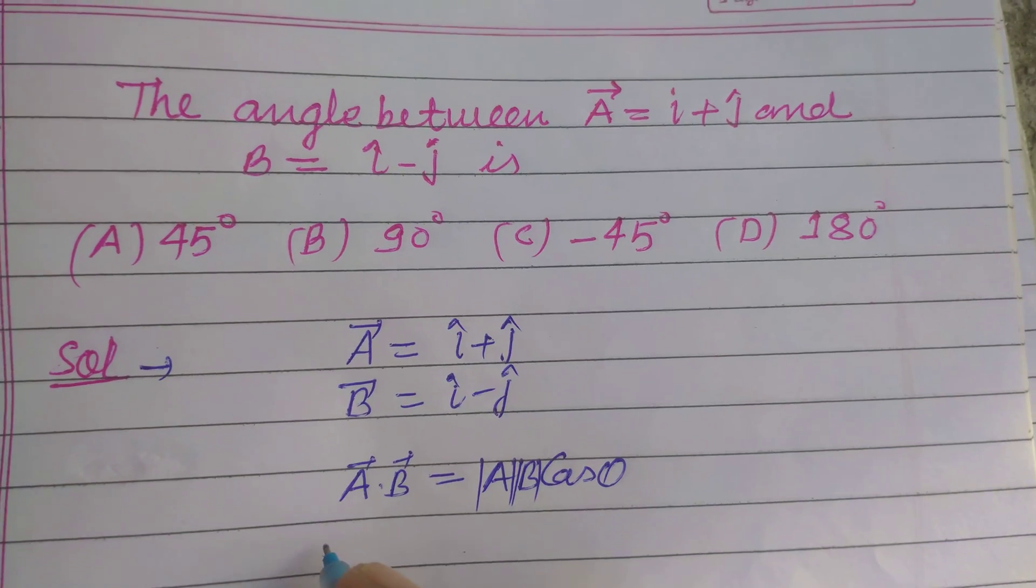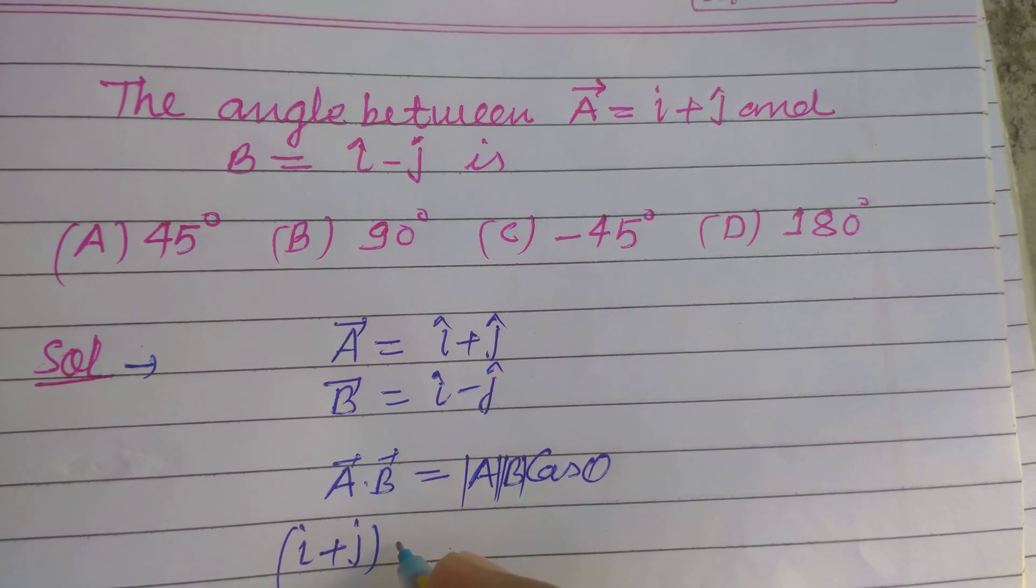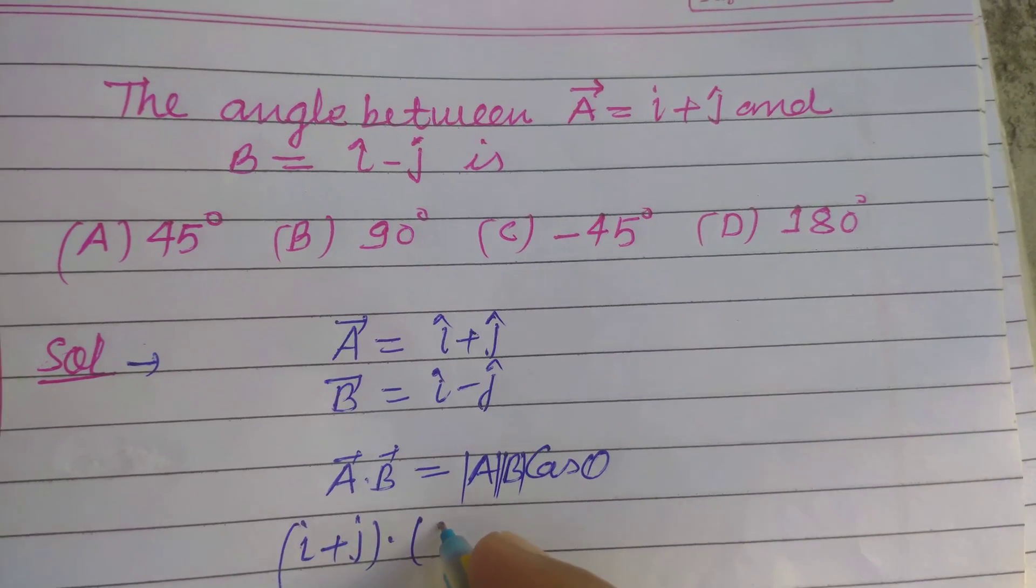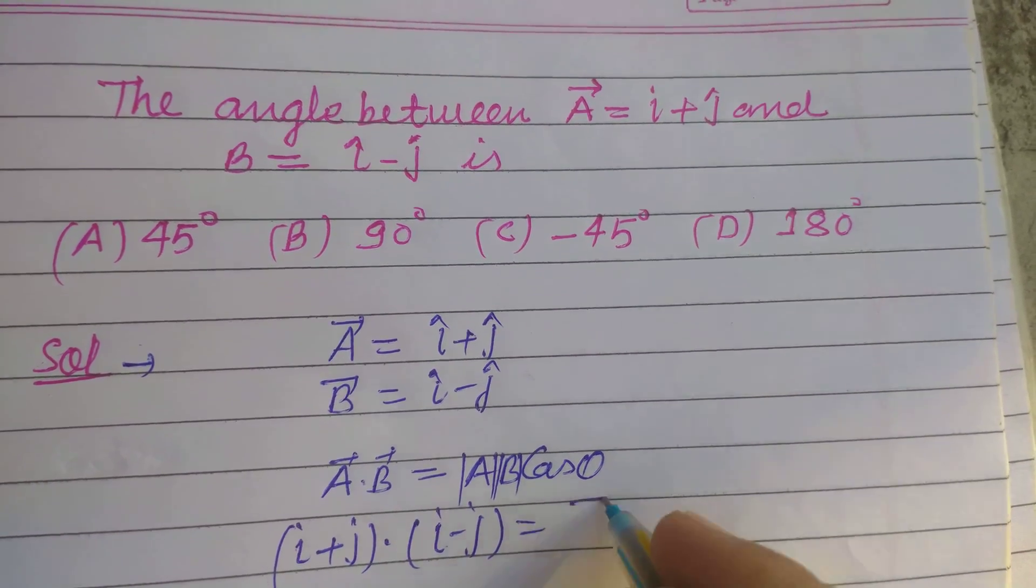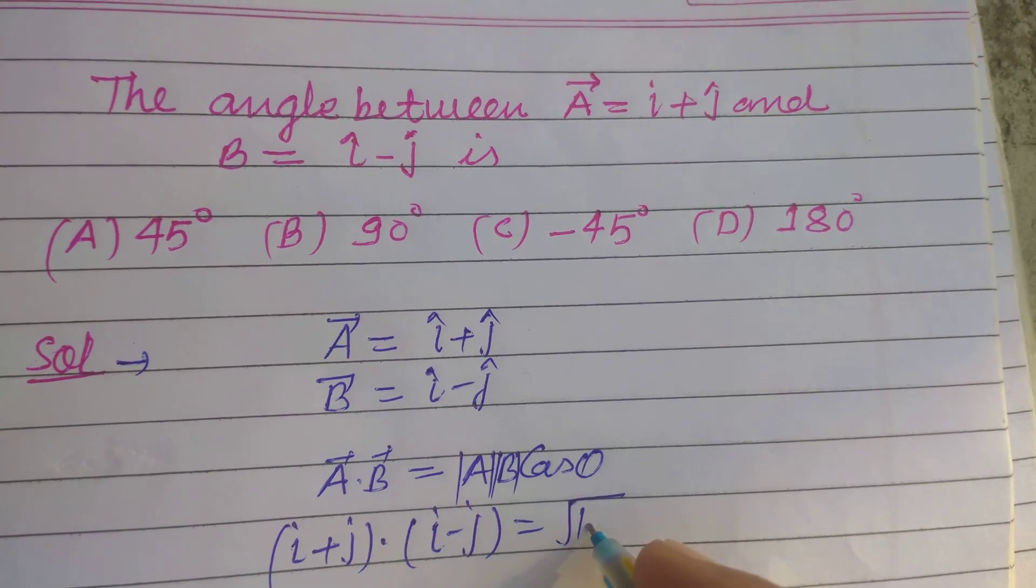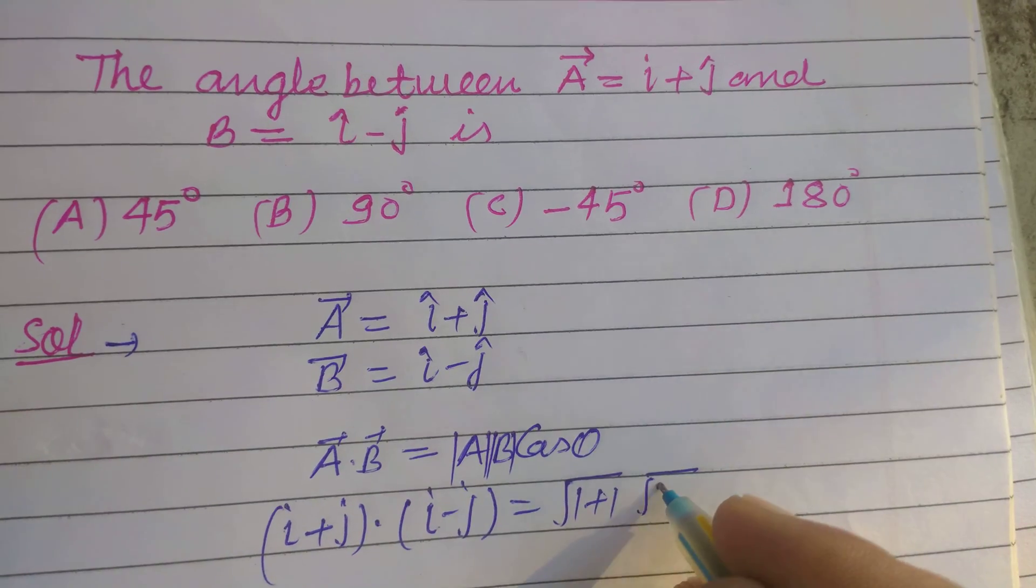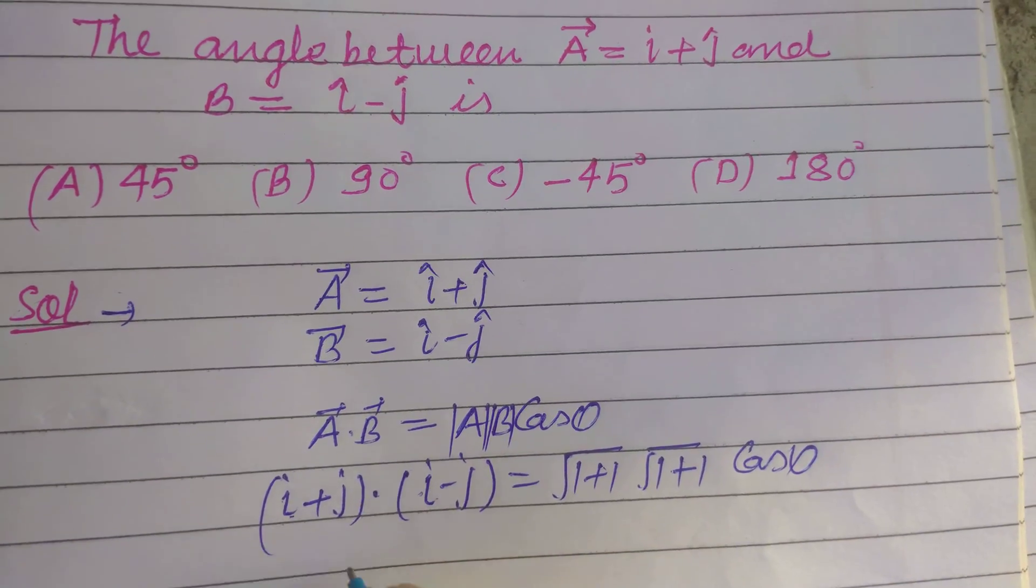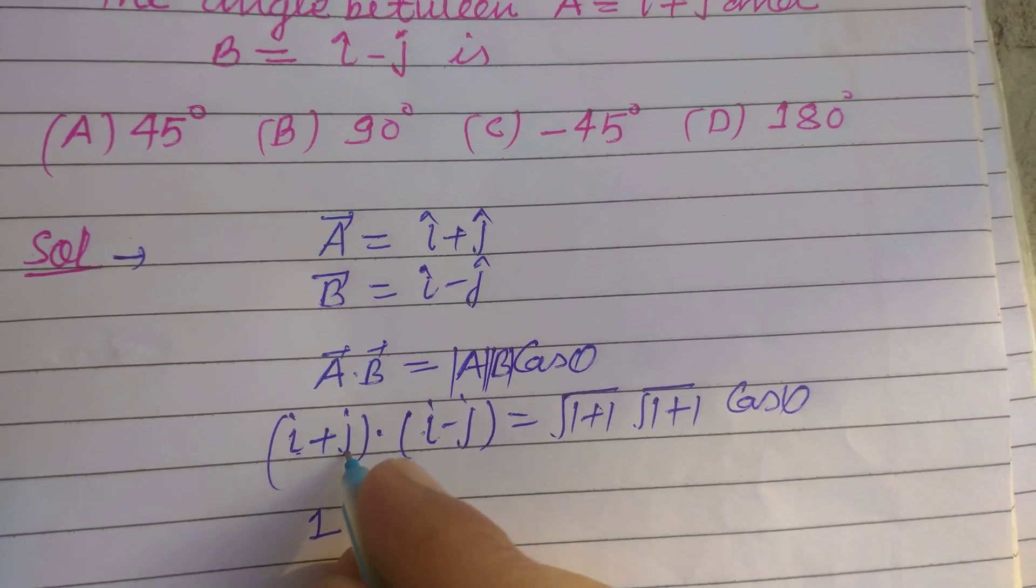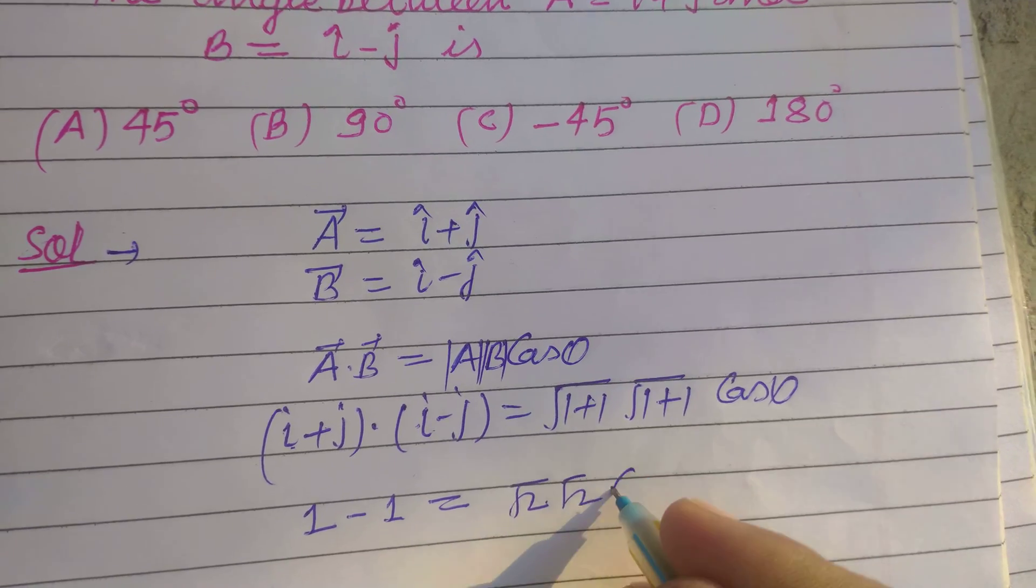So here A is i cap plus j cap dot i cap minus j cap, and mode of A is square root of 1 plus 1, and mode of B which is also square root of 1 plus 1, cosine theta. And i dot i which is 1 and j dot j which is minus 1, root 2 into root 2 cosine theta.